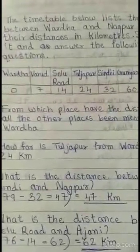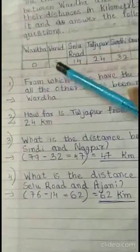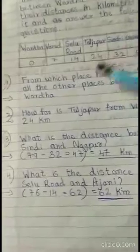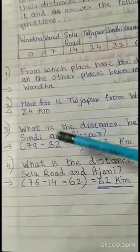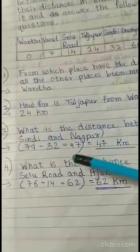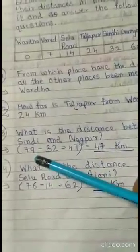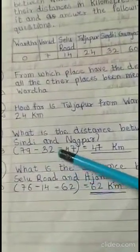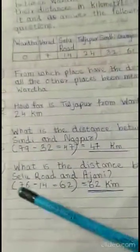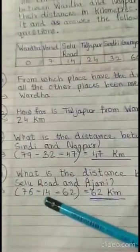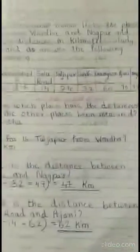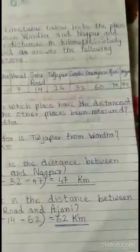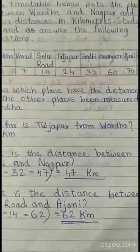This is how you are going to write it in the math notebook. First, write down the question, then draw the table, then write the question and the answer. 79 minus 32 equals 47 kilometers; 76 minus 14 equals 62 kilometers. This is how you are going to write it, children.